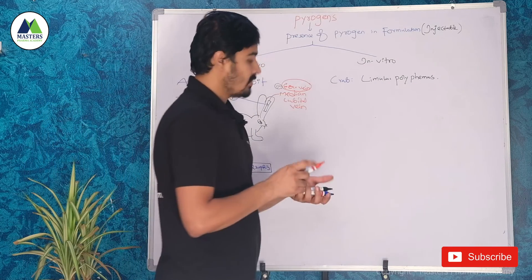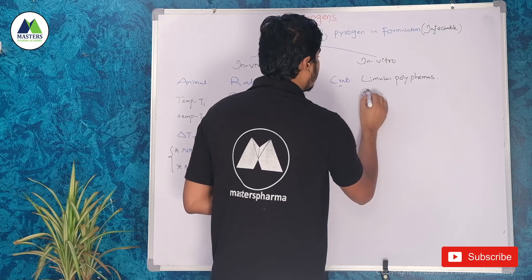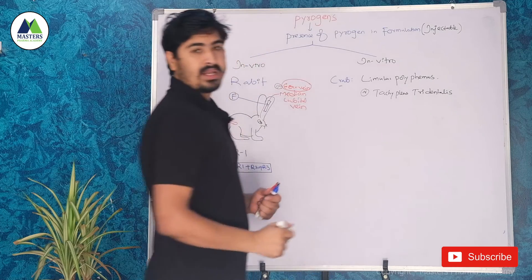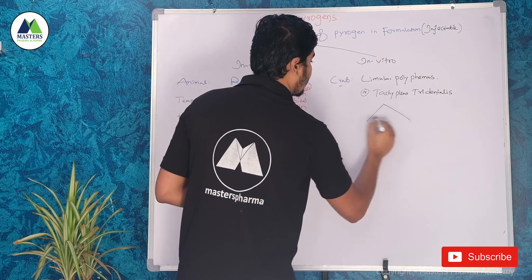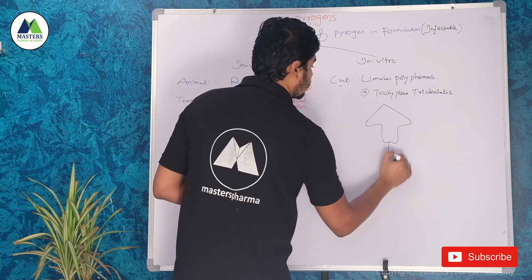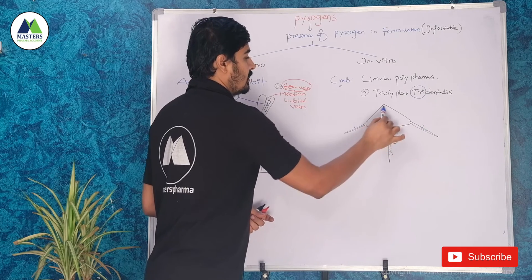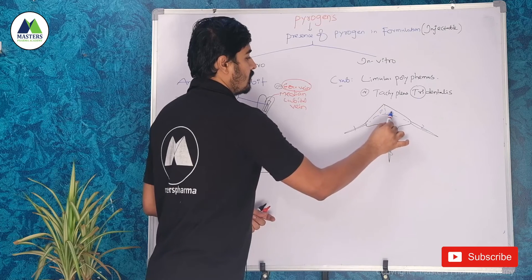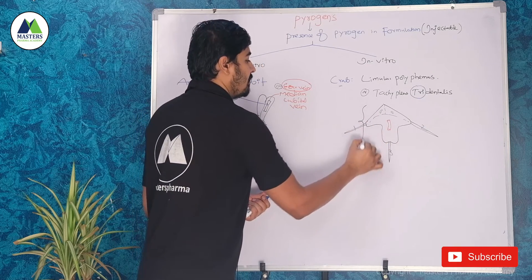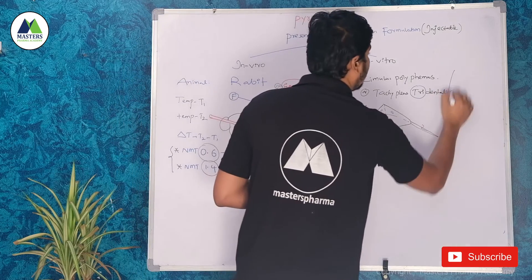In the in vitro test, we use Limulus polyphemus, also called Tachypleus tridentatus — a crab with three dents, hence tridentatus. This crab is also called the horseshoe crab because of its horseshoe shape. We collect blood cells from this crab, which are called amoebocytes, because like amoeba, these blood cells have no fixed shape.